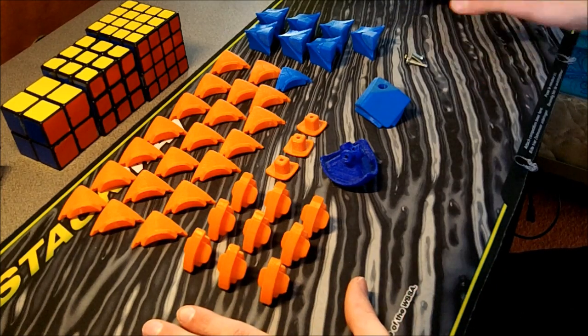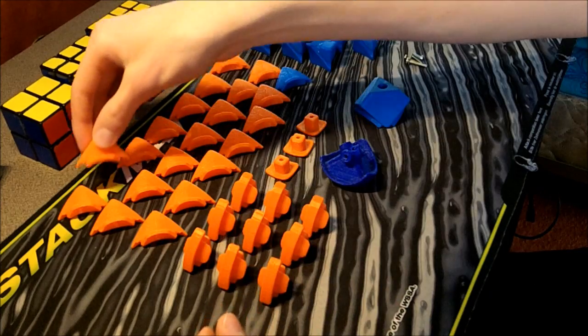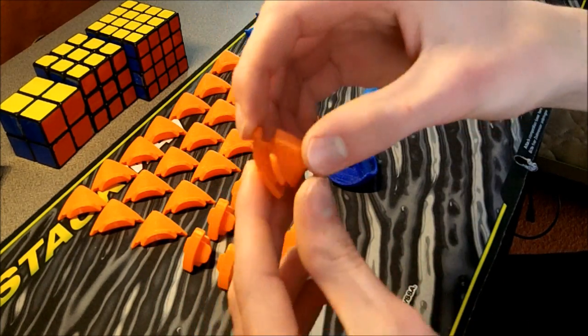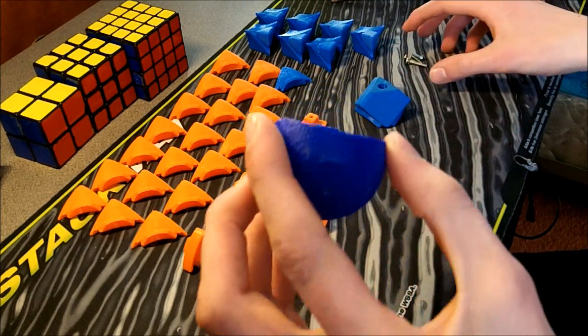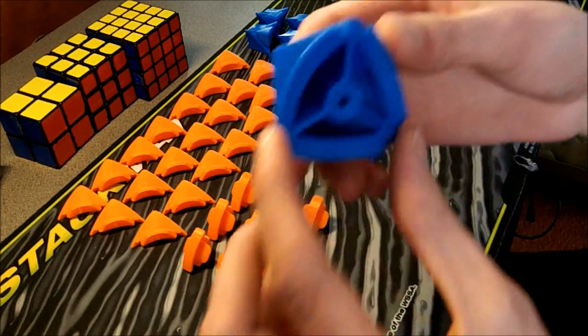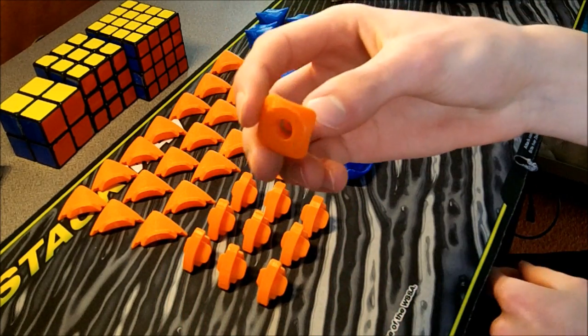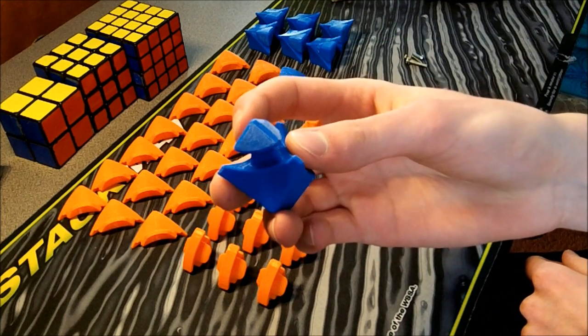First, here are the parts. We have 21 of these dedge pieces, 9 edge pieces, 1 core, 1 special corner, 3 centers, and 7 corners.